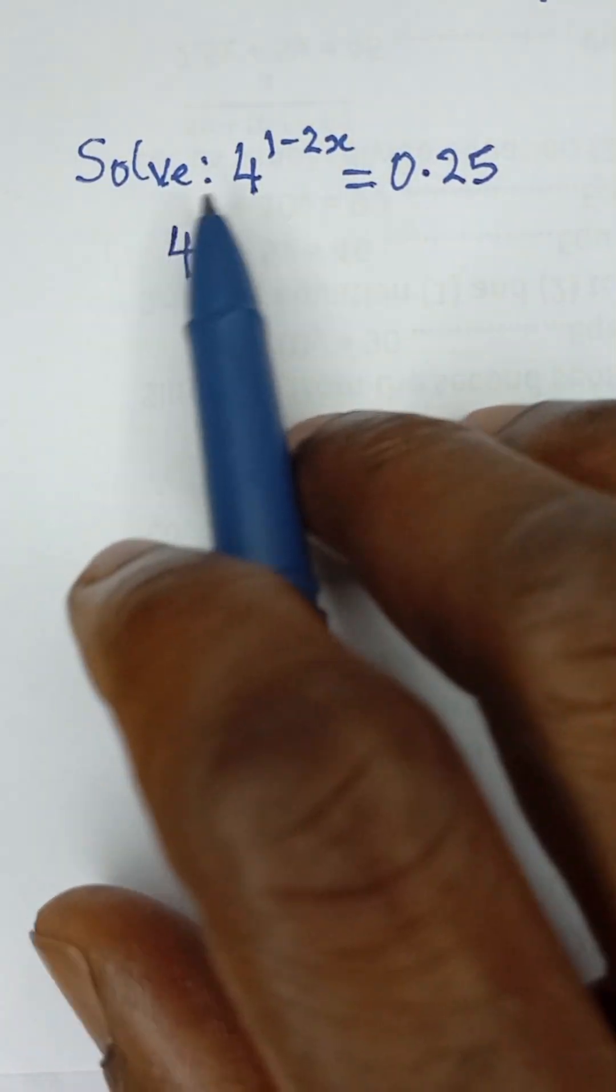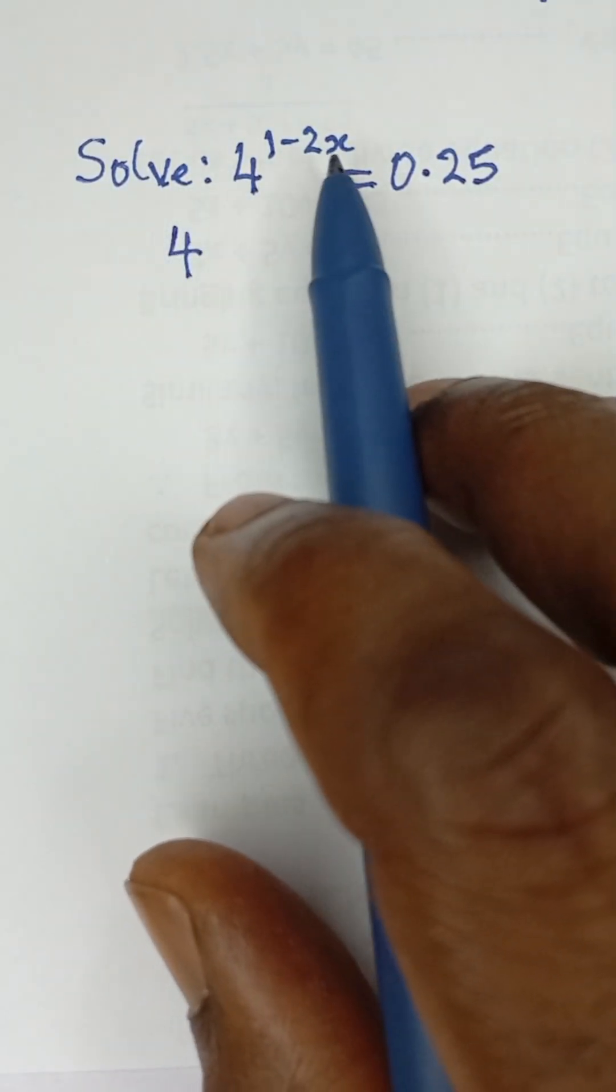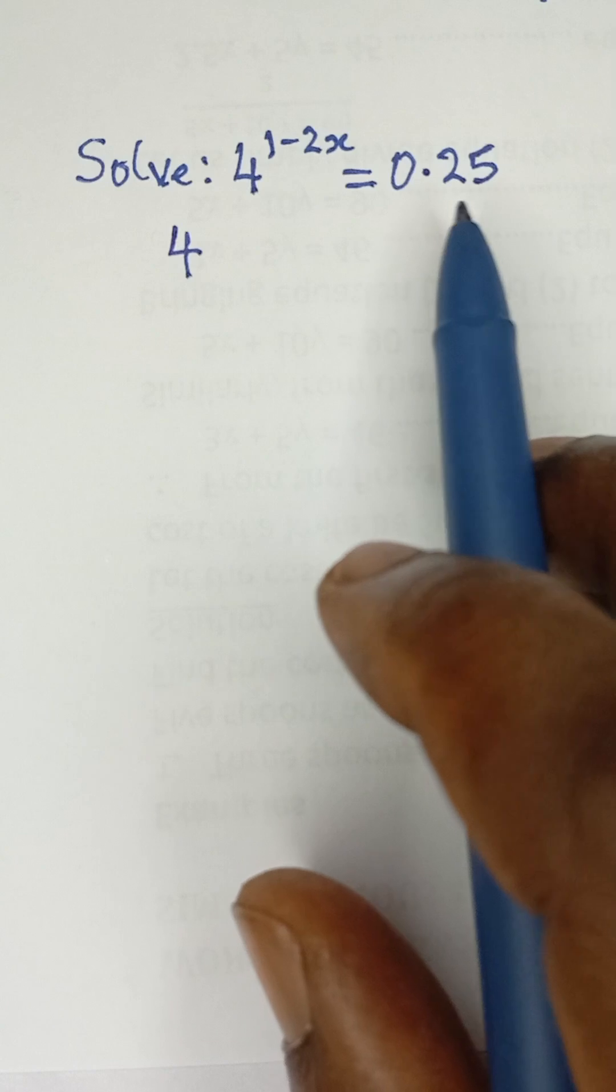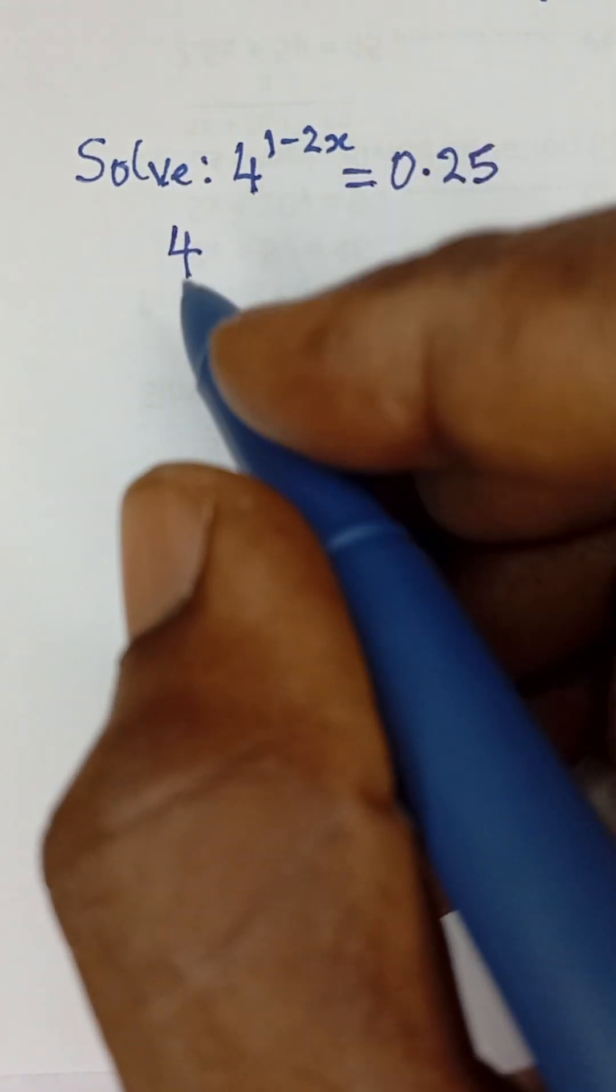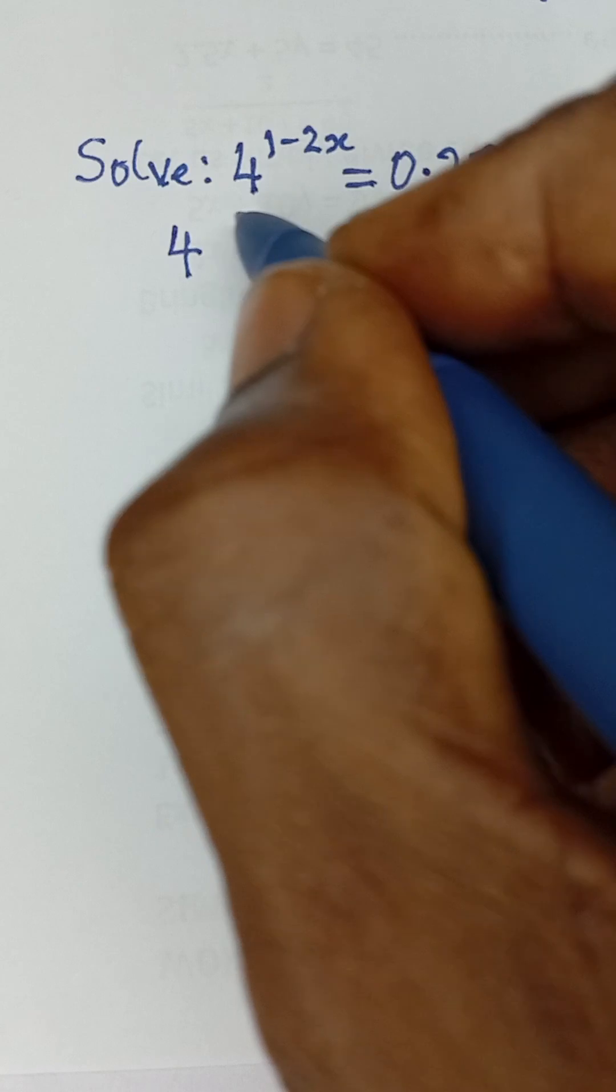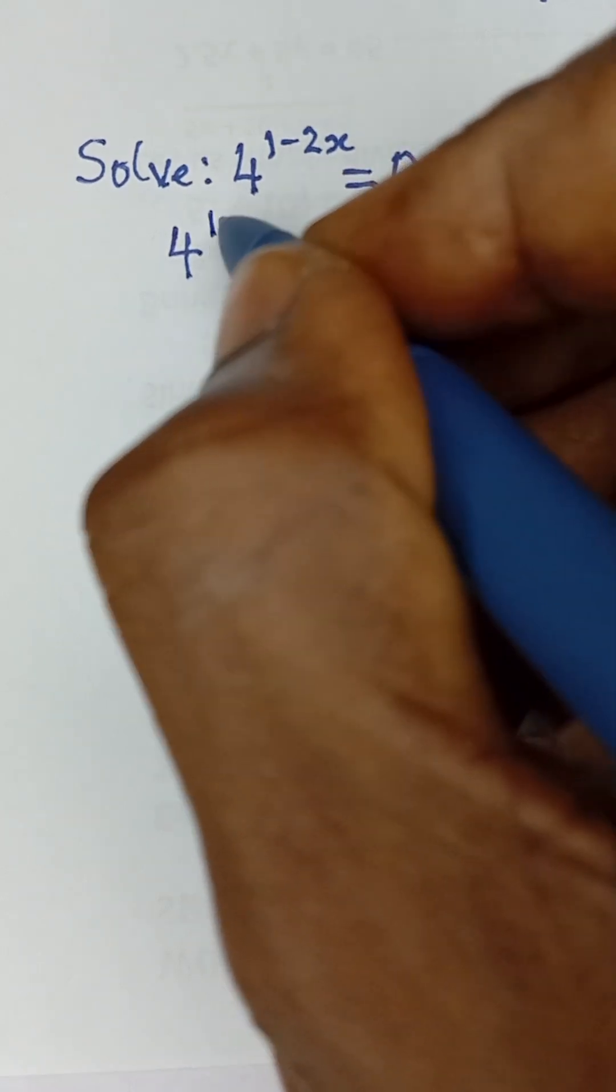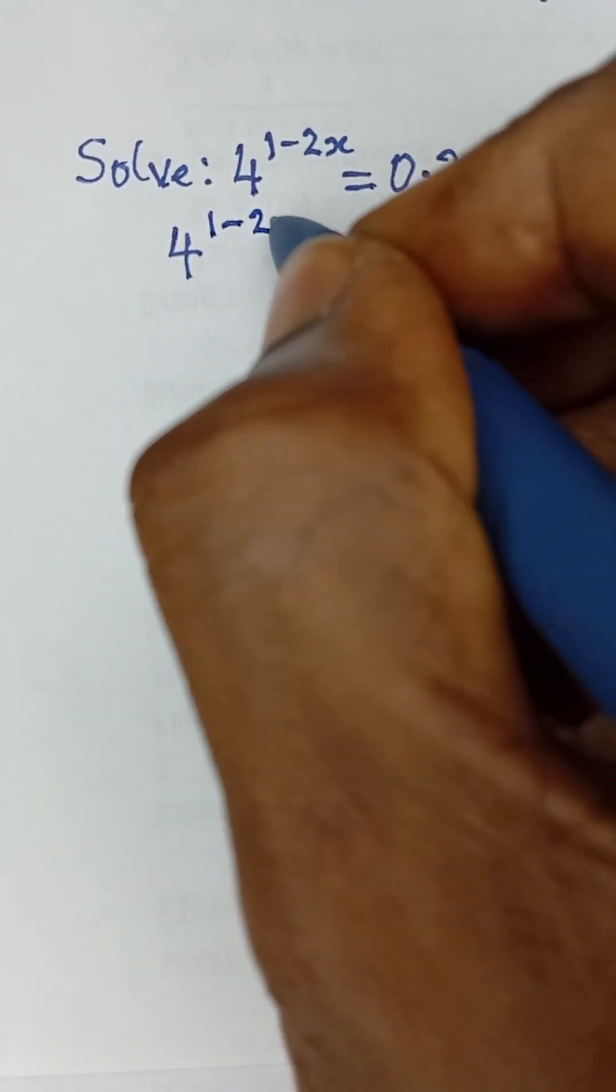All right, the question here says solve 4 raised to the power 1 minus 2x equals 0.25. So for us to solve this, we can simply write this as 4 raised to the power 1 minus 2x is equal to...